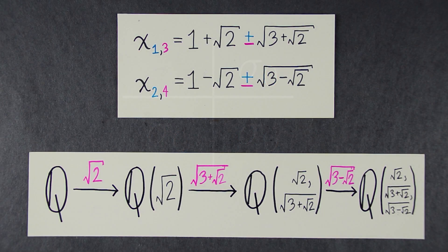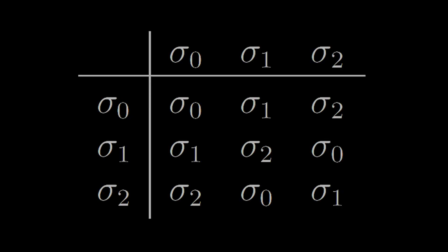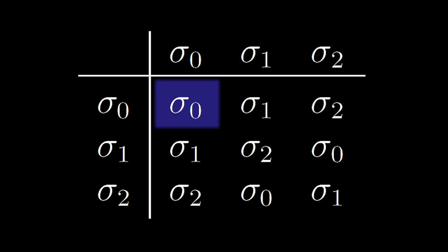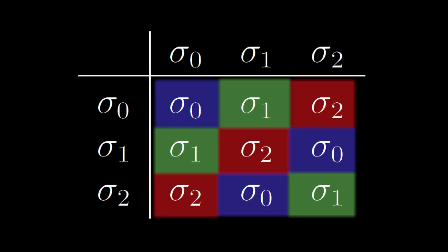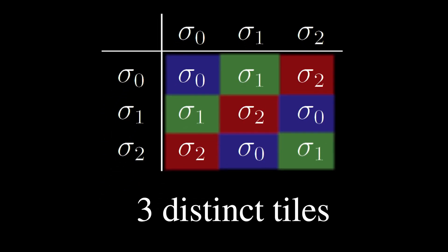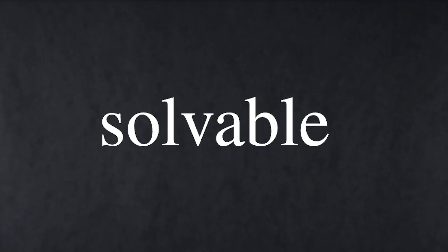In general, if a polynomial is solvable by radicals, the number of tiles is a prime number. Here's an example of such a group. Groups with this property are called solvable groups.